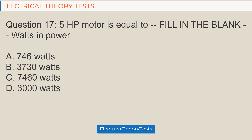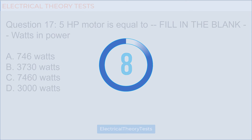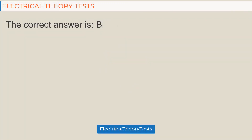Question 17: A 5 horsepower motor is equal to how many watts in power — a) 746 watts, b) 3730 watts, c) 7460 watts, d) 3000 watts. The correct answer is b) 3730 watts.